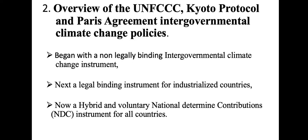This intergovernmental climate change instrument started with a non-legally binding instrument — the United Nations Framework Convention on Climate Change. When it was adopted, it was realized that it is not a legally binding instrument. Members of the convention, normally called parties, then decided they needed to go to the next level of a legally binding instrument, but at that time only for industrialized countries.